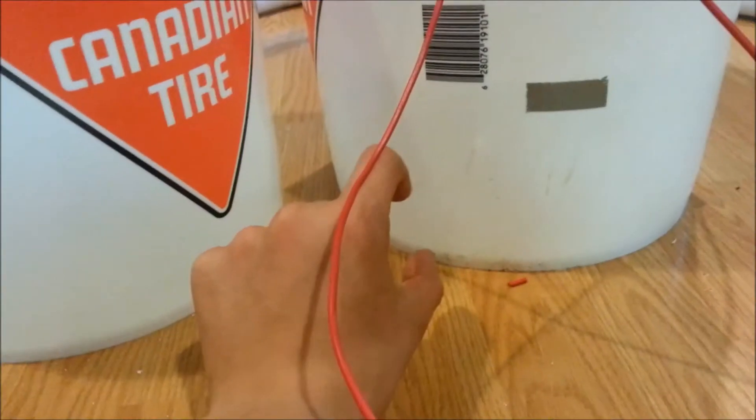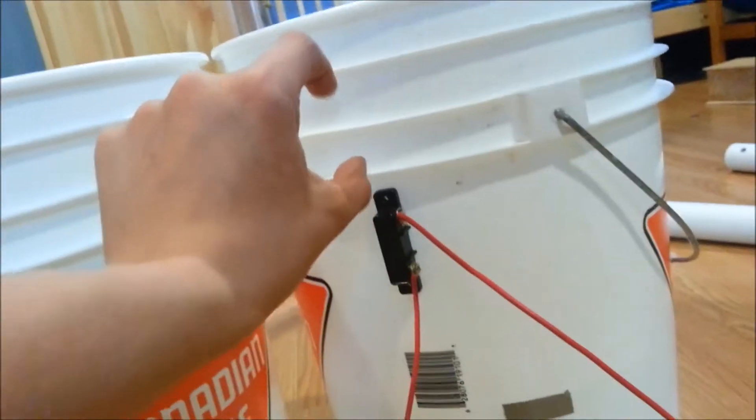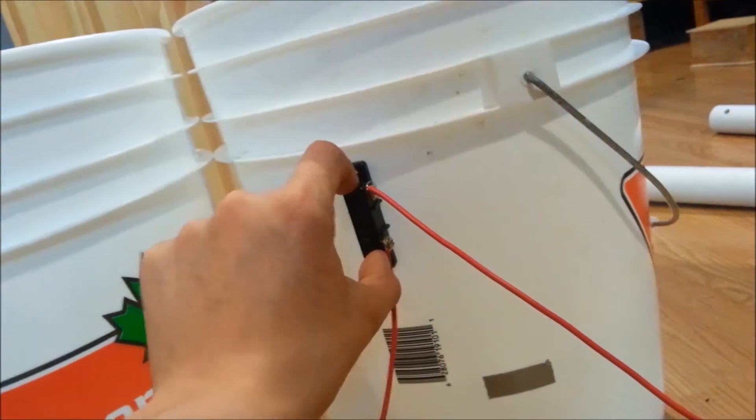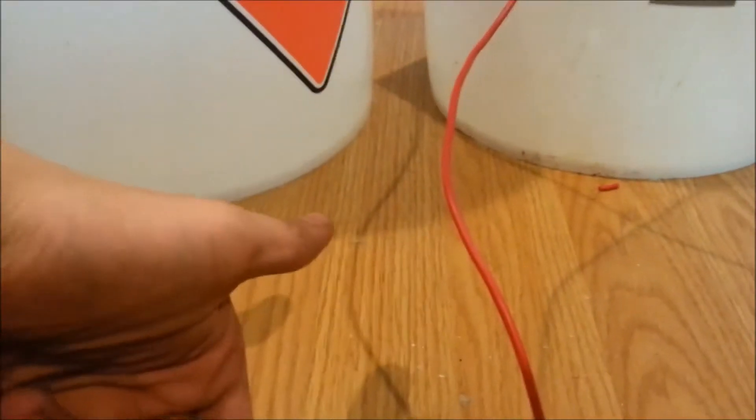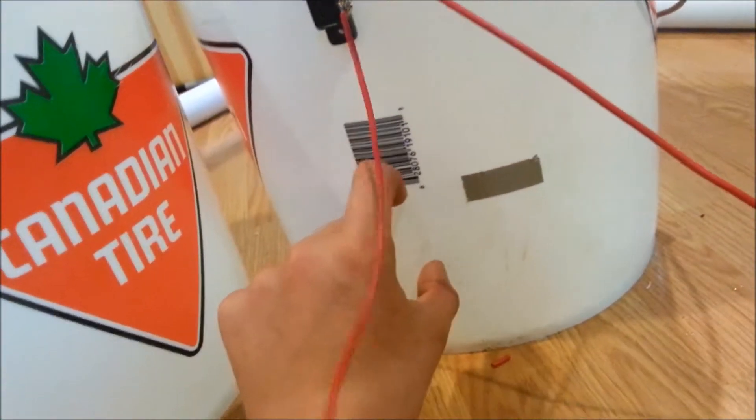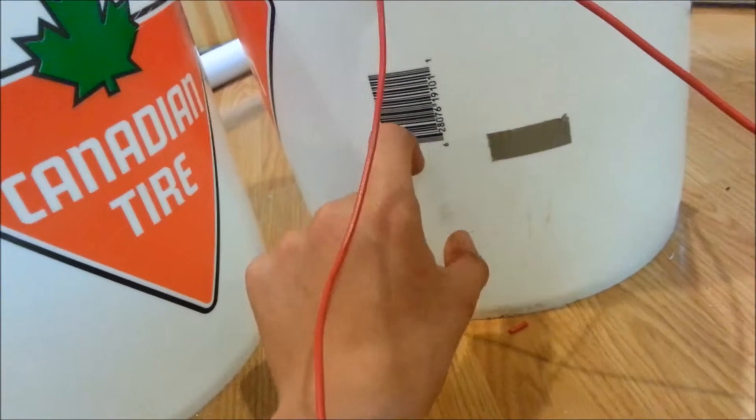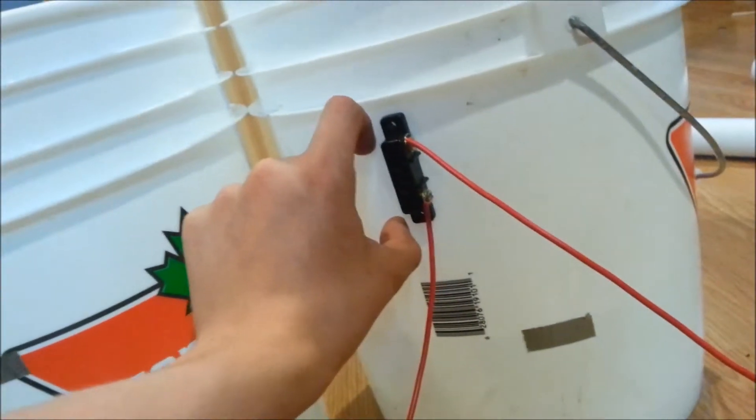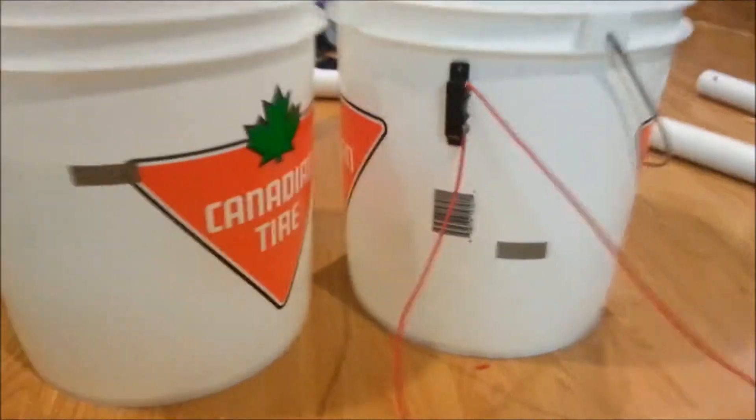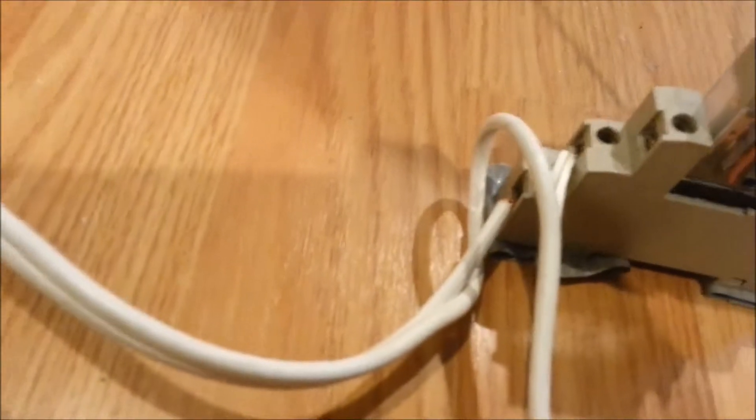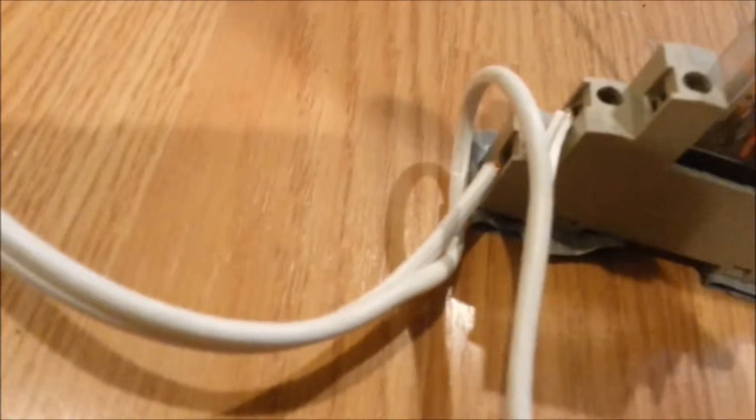If you put it in number four, if the float switch is right here, it turns on the pump up to here and stops. I have two buckets that mark the level of this one at the top part, same thing with this.